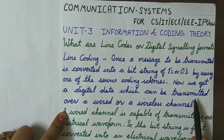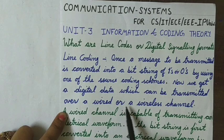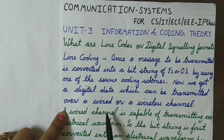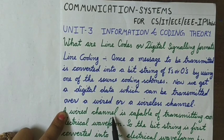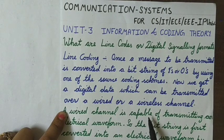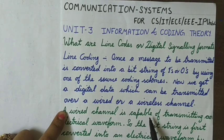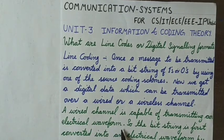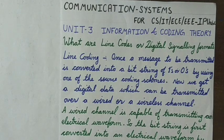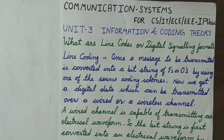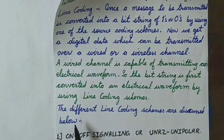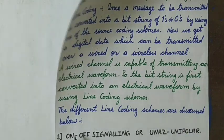This digital data can be transmitted over a wired or a wireless channel. For a wireless channel we need modulation techniques, but for transmission over a wired channel we require the digital data to be converted into an electrical waveform, because a wired channel is capable of transmitting an electrical waveform. The schemes used for converting a bit string into an electrical waveform are called line coding schemes. There are different line coding schemes which are discussed below.